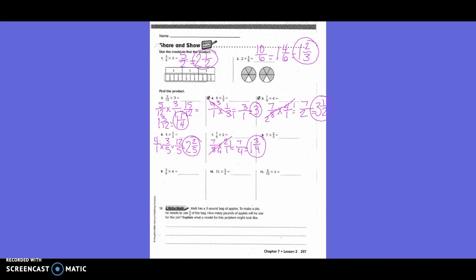Seven times two-fifths — write it as seven over one times two-fifths. Can I simplify before I start? No. Seven times two is fourteen, one times five is five. So the answer is fourteen-fifths.